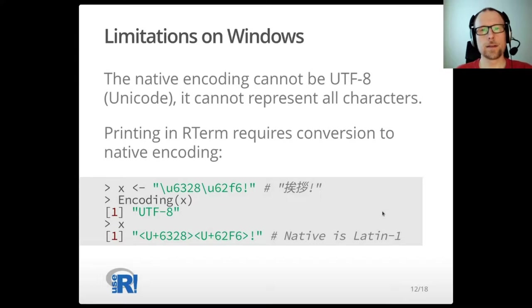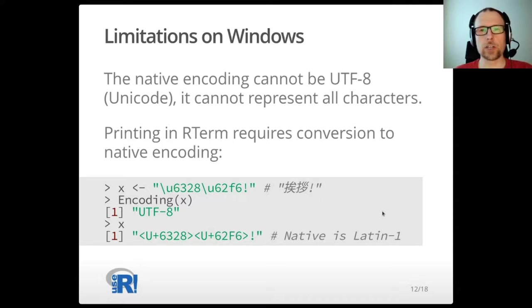This brings a limitation to Windows and R. The native encoding on Windows cannot be UTF-8 — it cannot be any other Unicode encoding — and hence it cannot represent all characters. Printing in R-term already requires conversion to the native encoding. So the Japanese string I showed before cannot even be printed in R-term; we get some weird escapes as shown here when running Windows in a Latin-1 locale. That would work fine when Windows is running in a Japanese locale, but not in Latin-1.